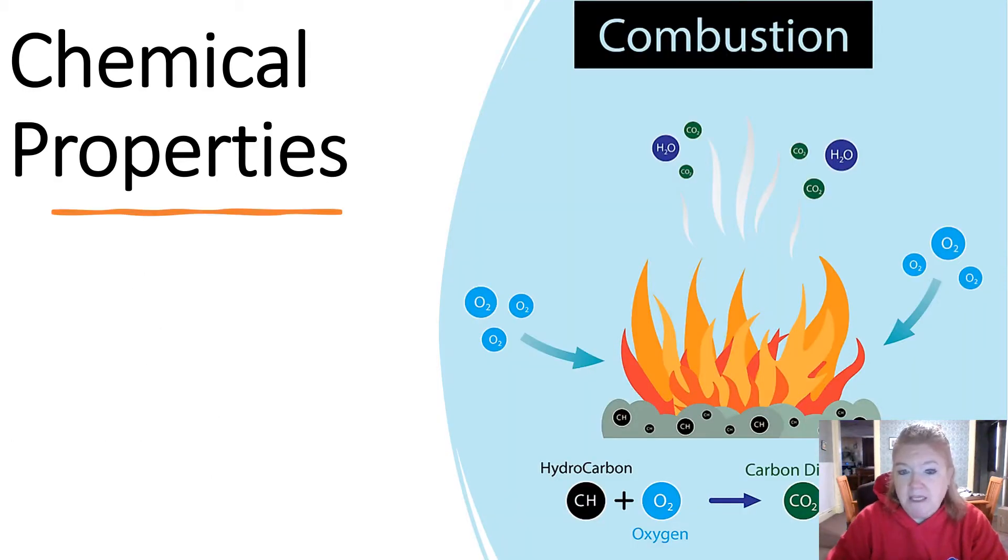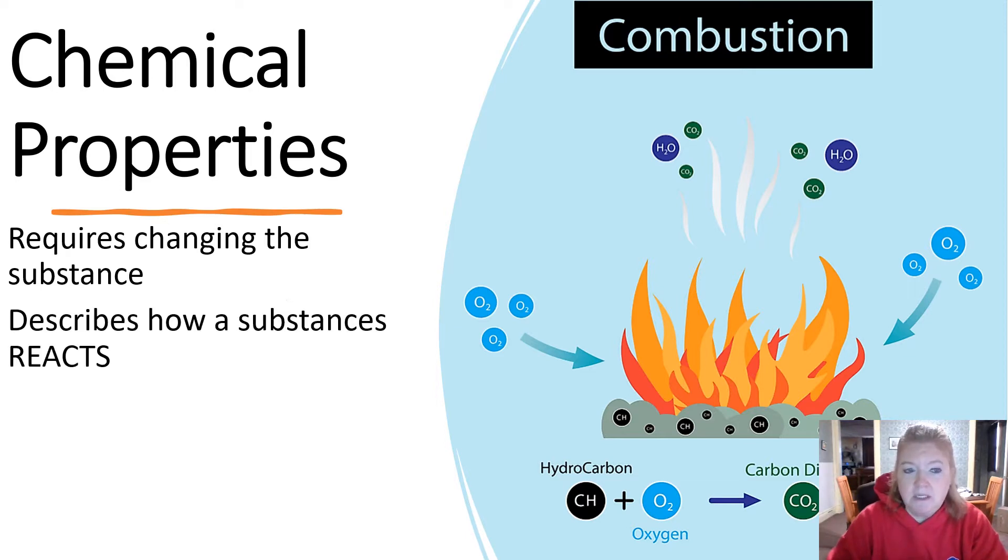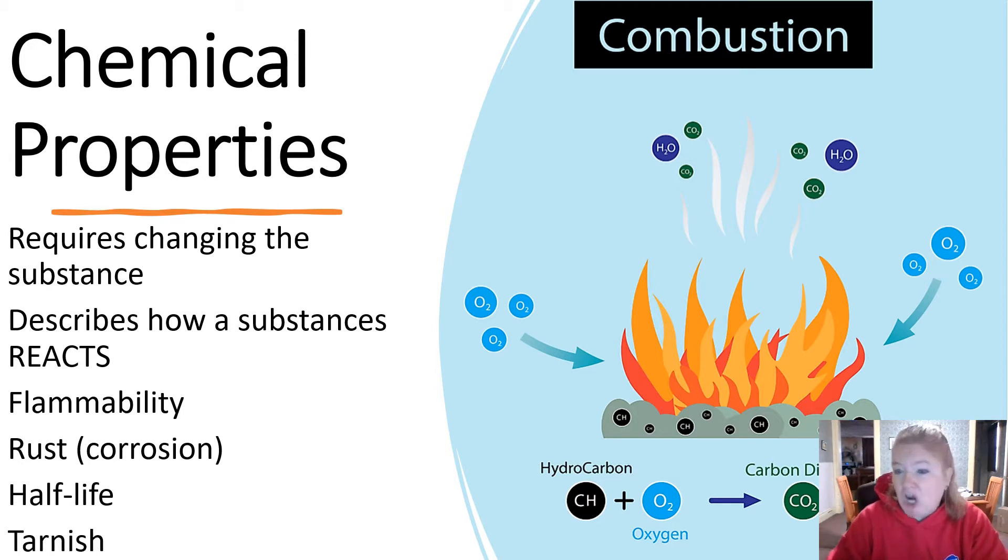Chemical properties, on the other hand, require changing the substance. So it describes how a substance reacts usually. So flammability, rust or corrosion, half-life, tarnishing, those kinds of things. How it reacts. So usually a keyword in the question is react with something that indicates chemical property. So this means we have to try to change the substance.